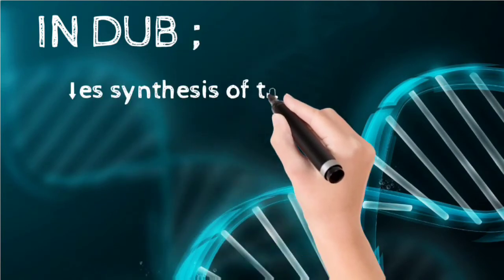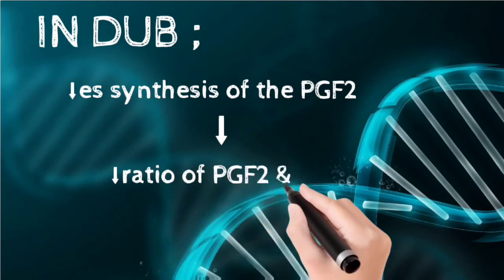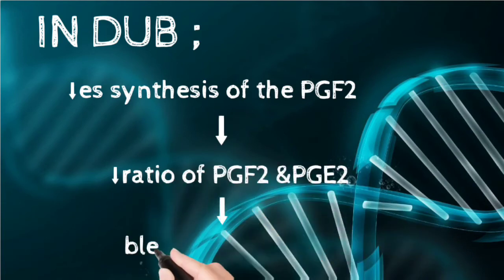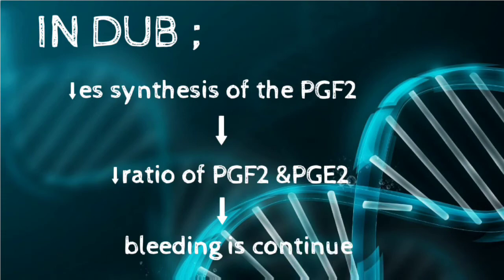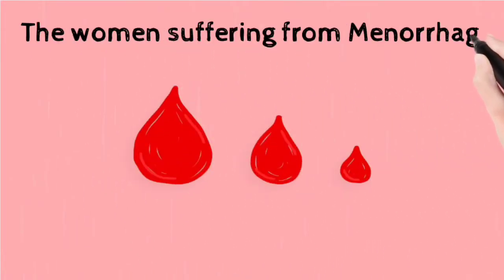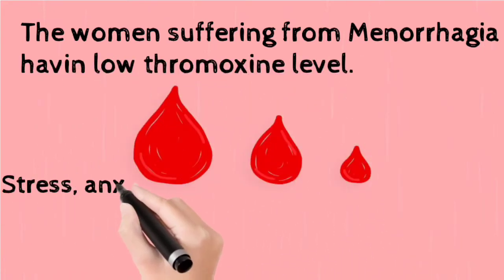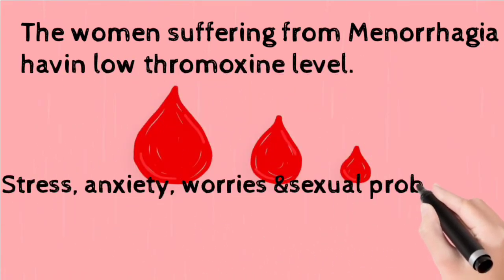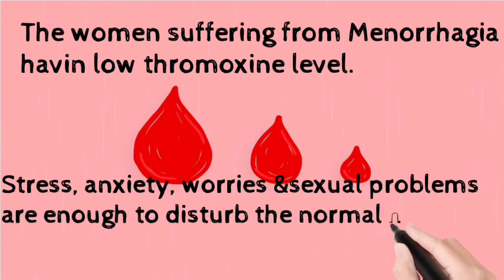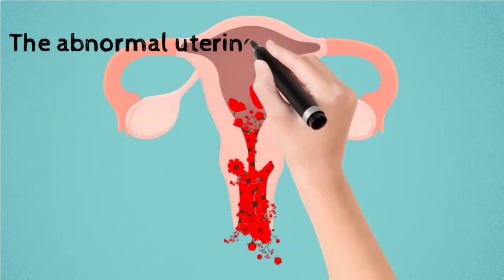In the case of dysfunctional uterine bleeding, there is decreased synthesis of PGF2-alpha, which decreases the ratio of PGF2-alpha to PGE2, resulting in increased bleeding and low thromboxane levels. Women suffering from menorrhagia have low thromboxane levels. Stress, anxiety, worries, and sexual problems are enough to disturb the normal hormonal levels in the body.